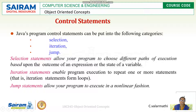Control statements in Java are divided into three categories: selection statements, iteration statements, and jump statements. Selection statements allow your program to choose different parts of execution — for example, if, if-then-else. Iteration statements enable execution to repeat one or more times. Jump statements allow the program to execute in a non-linear fashion; break and continue are the best examples.